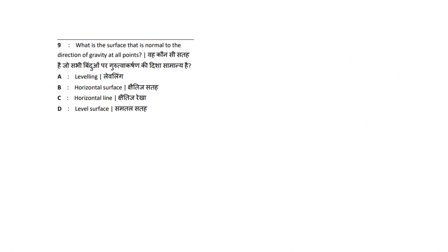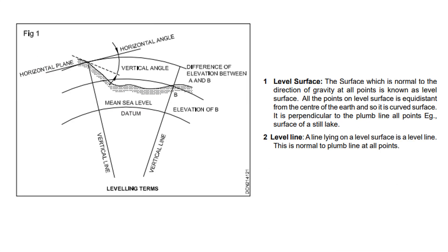First question: What is a surface that is normal to the direction of gravity at all points? That is called Level Surface. The options are: Optional Leveling, Horizontal Surface, Horizontal Line, or Level Surface.